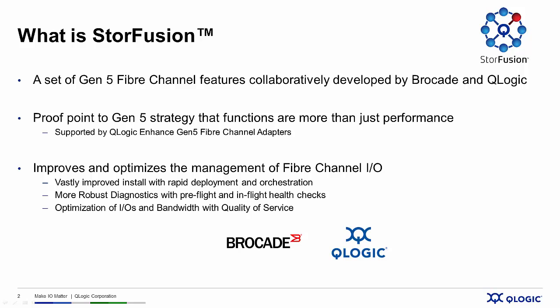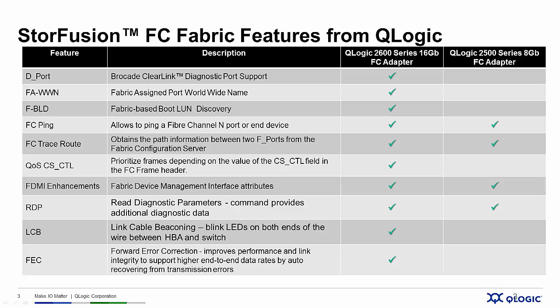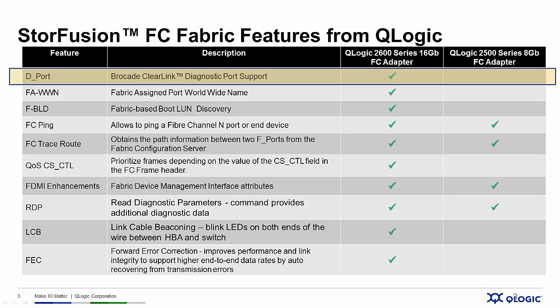If you want your SAN to be smarter, faster, and easier to manage, then you need to upgrade to Gen5 16GB Fibre Channel today. In this session, we're going to focus on one of the features in the enhanced diagnostic category — these are the 10 specific technology enhancements implemented with Q-Logic enhanced Gen5 Fibre Channel adapters and Brocade Gen5 Fibre Channel infrastructure. We are going to focus on d-port and integration with Brocade Clearlink Diagnostics in this session.